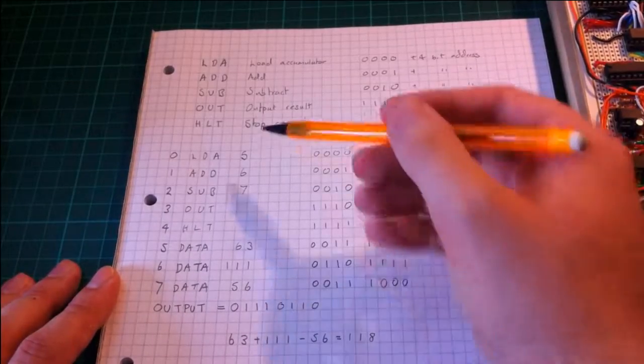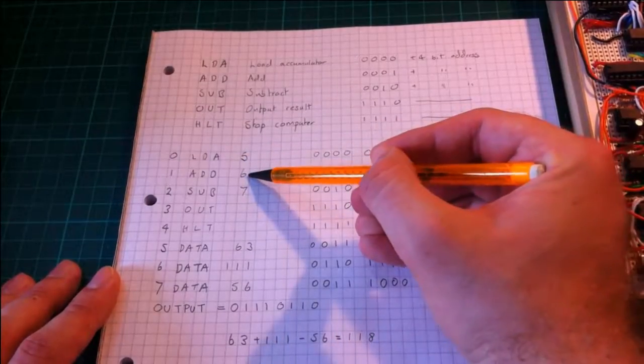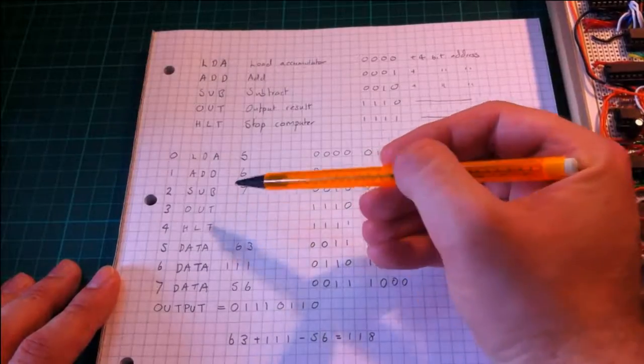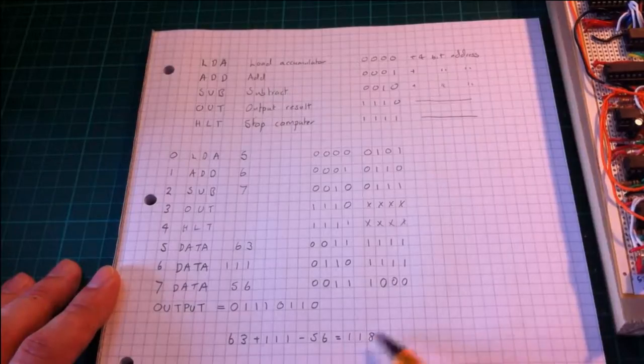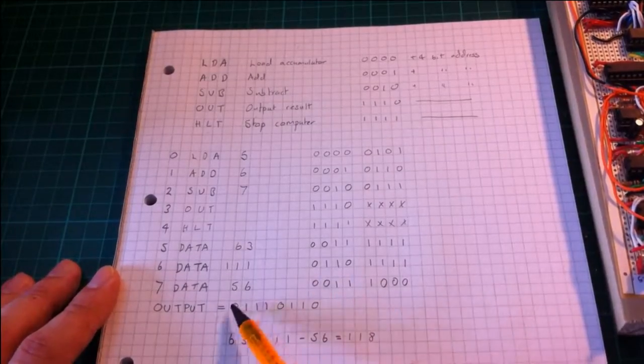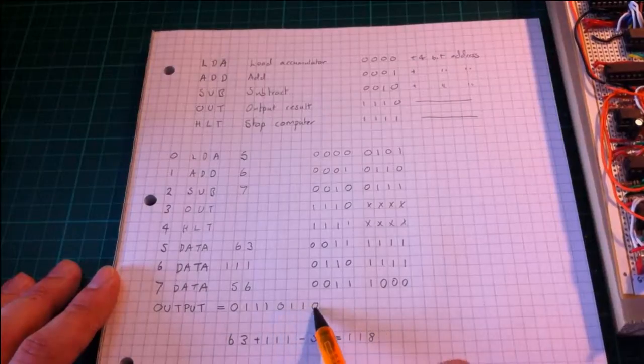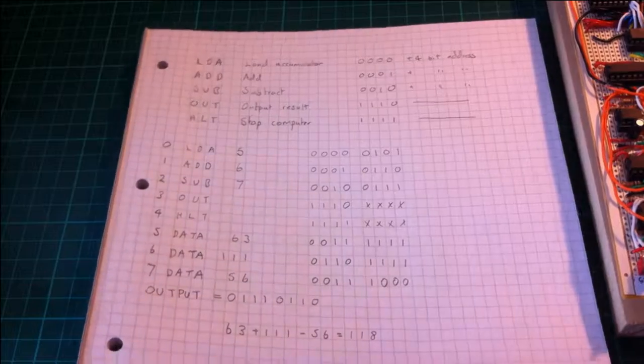So the computer loads number 63, adds to it 111, and subtracts from it 56. So it does this sum which should give us 118, which in binary is 01110110. So let's see how we'd enter this on the computer.